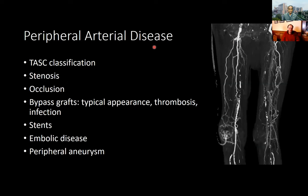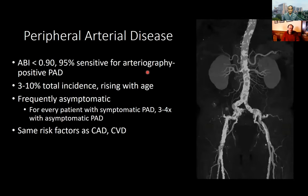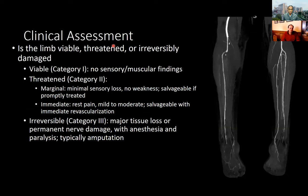PAD is frequently diagnosed on ABI — the least expensive method. An ankle-brachial index less than 0.9 is quite sensitive for PAD on arteriography. PAD is quite common with increasing incidence with age; these patients are often asymptomatic, so you'll pick this up on routine imaging. Same risk factors as coronary artery disease or cerebrovascular disease. The clinical assessment considers: is the limb viable, threatened, or irreversibly damaged? A viable limb means pain but no sensory or muscular findings — not urgent. A threatened Category 2 limb has some sensory loss and the limb is still salvageable if treated promptly.